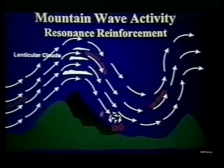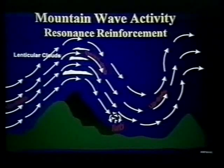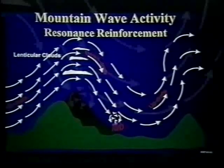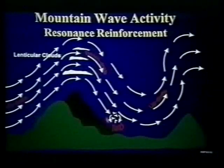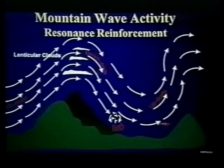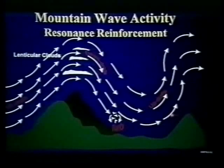This wave pattern has been known to go downwind for 2,000 miles. In this example, a rotor would exist under the third wave. This turbulence — caused by the flow restriction of the jump accelerator — is said to be the worst turbulence known to aviation.